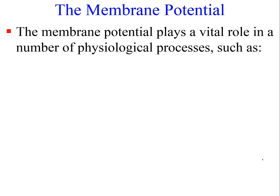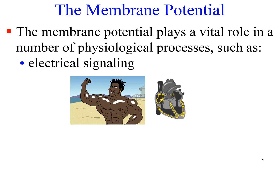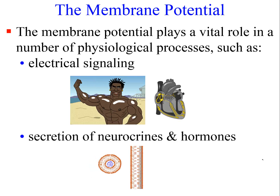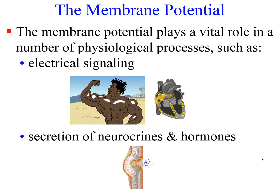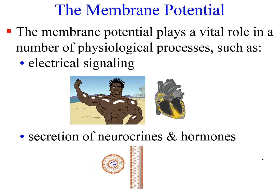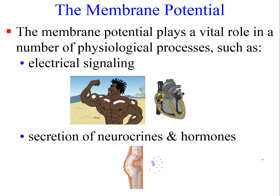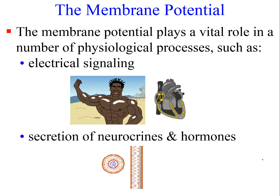The membrane potential plays a vital role in a number of physiological processes, such as electrical signaling in neurons and muscles, and the secretion of neurocrines and hormones — for example, the secretion of insulin by beta cells of the pancreas, or acetylcholine by alpha motor neurons of the somatic nervous system.